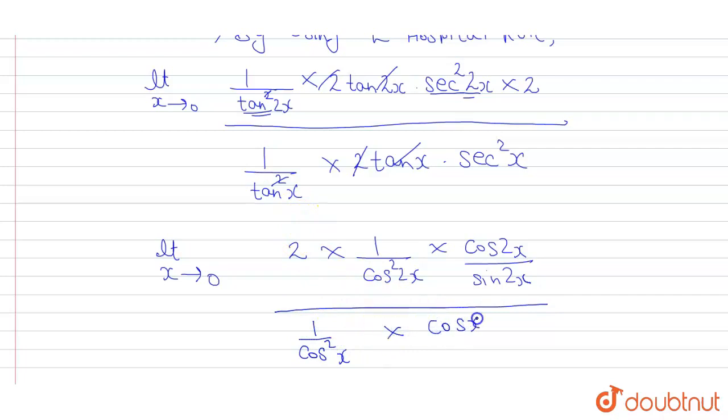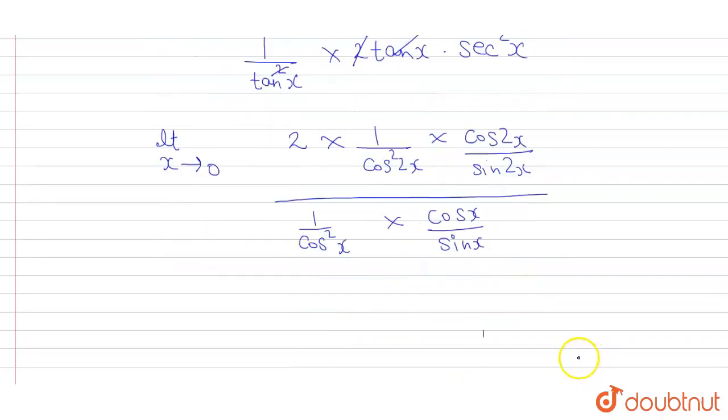Now sec square x is 1 upon cos square x, and tan x is sin x upon cos x, so the reciprocal will be cos x upon sin x. Now cos 2x cancel out and cos x cancel out. We are left with limit x tends to 0 of 2 upon cos 2x into sin 2x into sin x cos x upon 1.